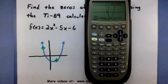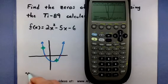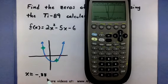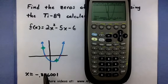What you want to look at is the x. It's giving us that one of our zeros is approximately at a negative .886001. So that's approximately where that first zero is.